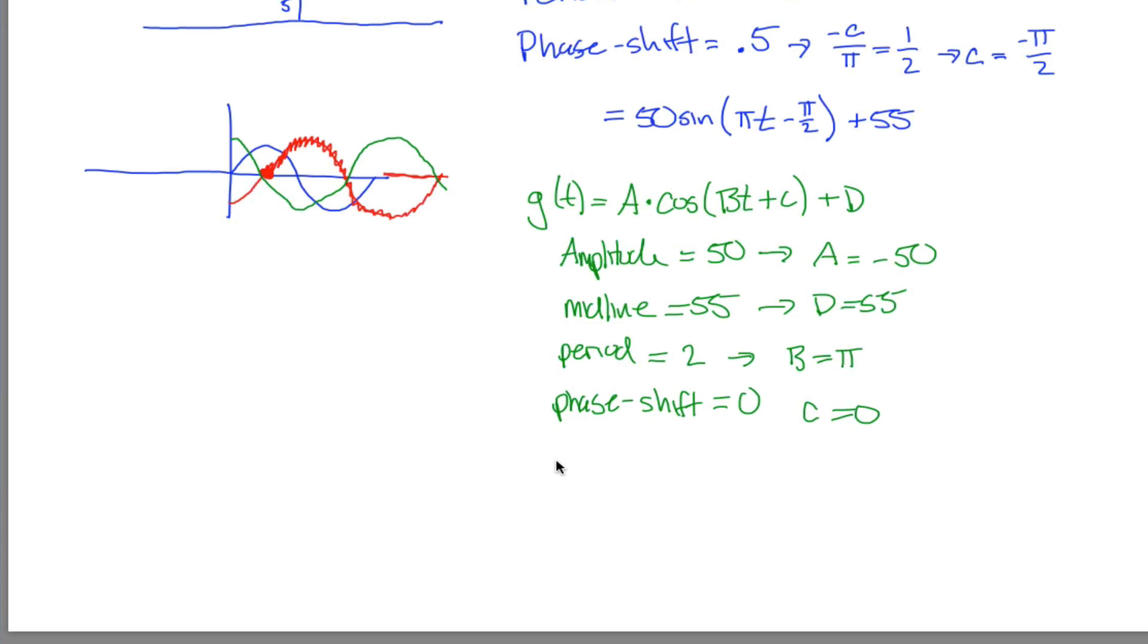Because when we flip the orientation here, we went from green to red and red was exactly what we wanted. The phase shift is 0 so therefore C equals 0. So now I can copy this. I can say G of T is equal to A which is negative 50 times the cosine now of B which is pi times T plus C, but plus 0 you don't even need to write that, plus 55.